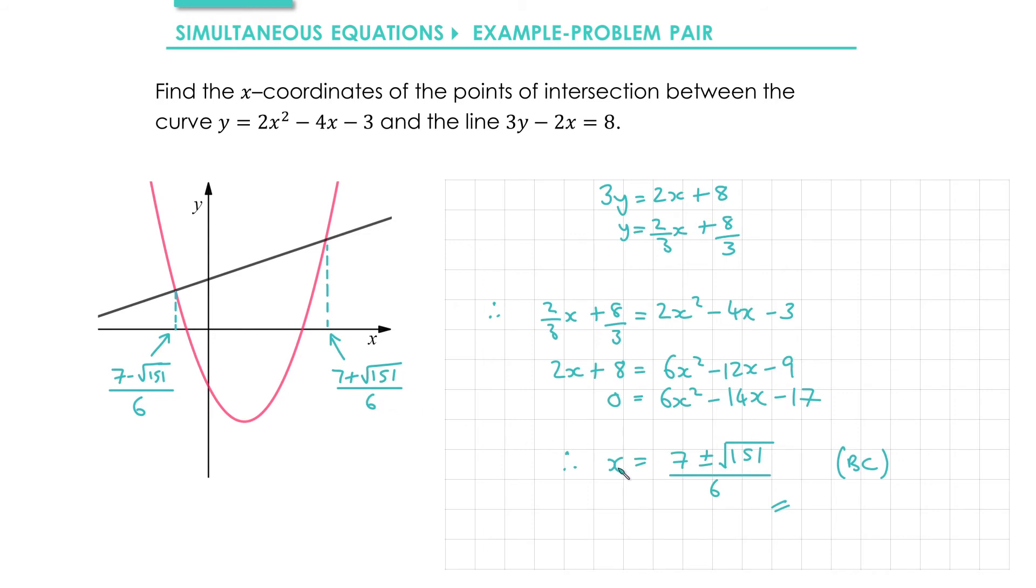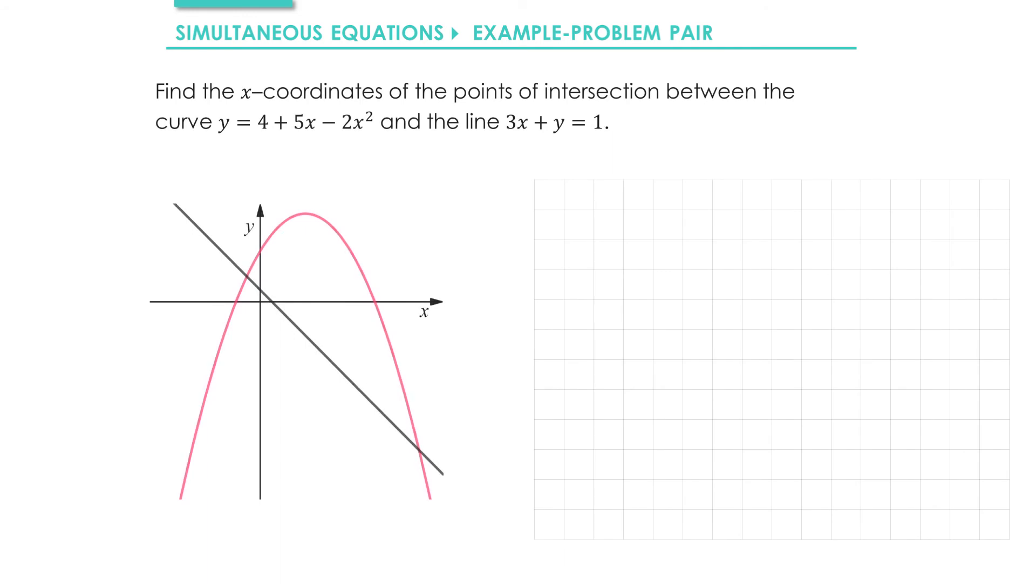So the solution for x from my simultaneous equations corresponds to the x values where the curves intersect on the graph. Okay here's a problem for you to have a go at. Pause the video and then come back and check your solution against mine.